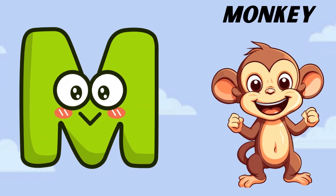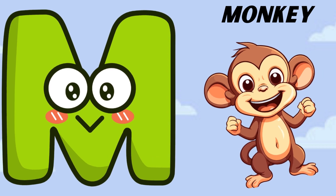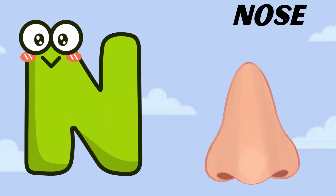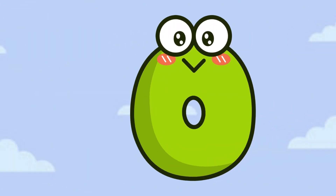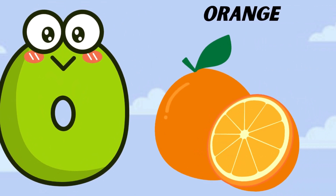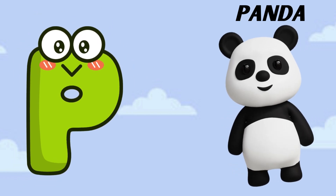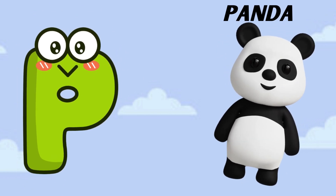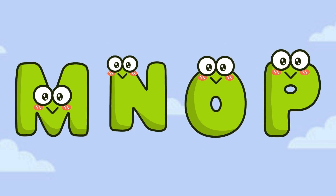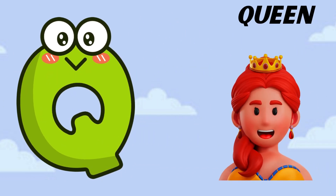M is for monkey, m-m-monkey. N is for nose, n-n-nose. O is for orange, o-o-orange. P is for panda, p-p-panda.